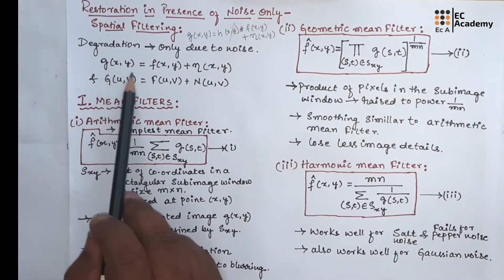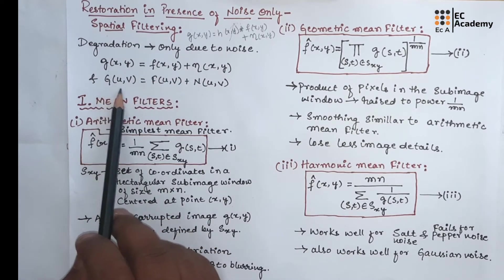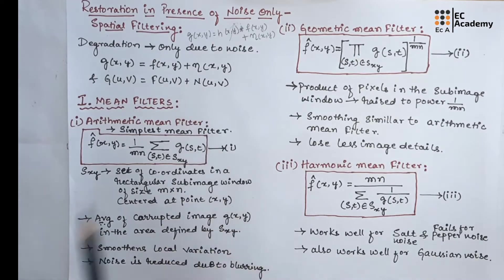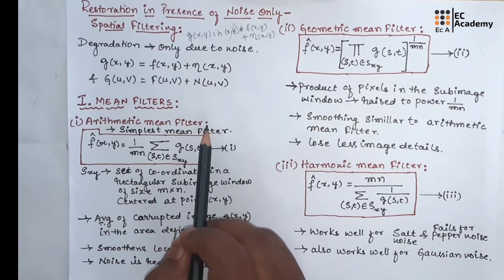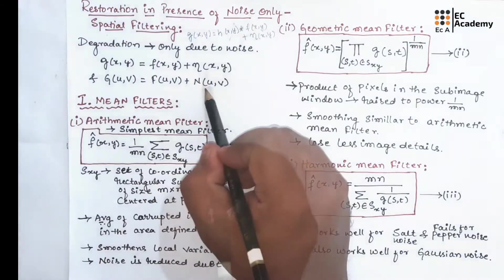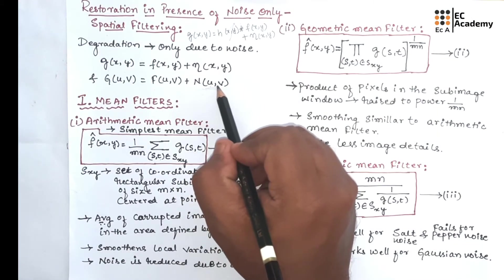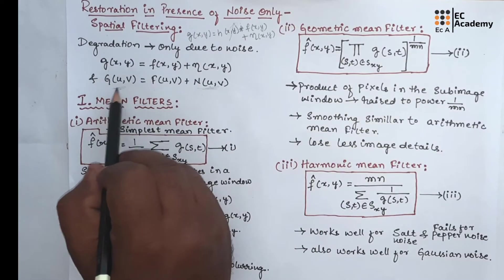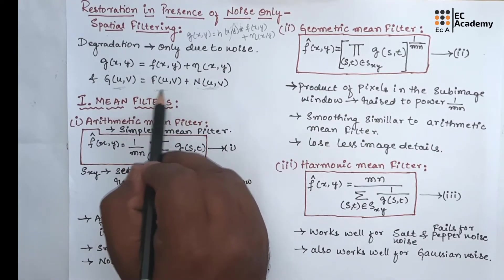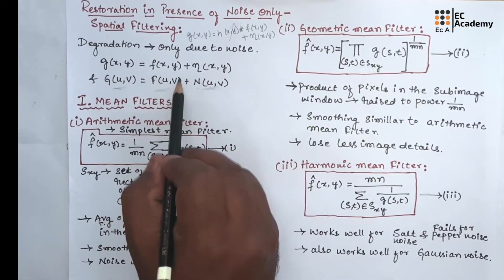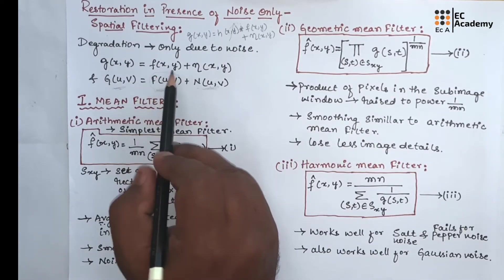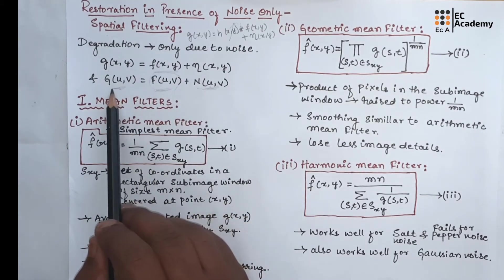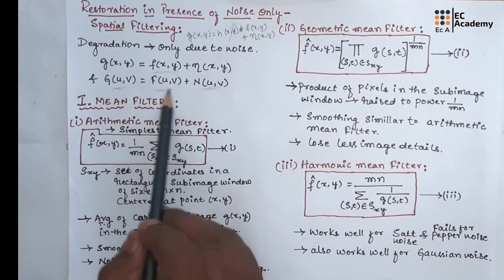If we take the Fourier transform of this equation, we will get G(u,v) = F(u,v) + N(u,v). In case of periodic noise which we discussed in our previous lecture, it is possible to eliminate N(u,v) from this spectrum G(u,v) by subtracting N(u,v) with G(u,v) to obtain the original image. If we obtain this term, if we take the inverse Fourier transform, we will get F(x,y). So, subtracting N(u,v) with G(u,v), we can obtain the original image.